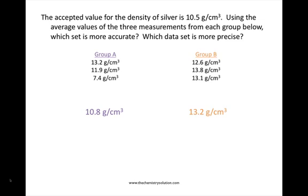The average for group A, 10.8 grams per centimeter cubed, is very close to the accepted value for the density of silver of 10.5 grams per centimeter cubed. So group A has the most accurate data set.